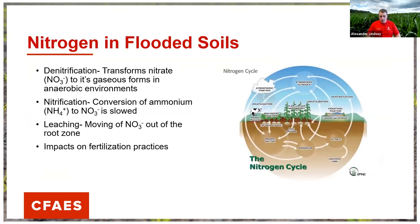When thinking about flooding in corn production systems, we're also worried about nutrients, particularly nitrogen. Nitrogen is extremely driven by biological processes and is a very transient nutrient compared to phosphorus or potassium. In flooded conditions, we may experience denitrification, which transforms nitrate into gaseous forms in anaerobic environments. We could also see a slowdown of nitrification — the conversion of ammonium to nitrate — due to limited microbial activity, and an increase in leaching where nitrate moves out of the soil environment.